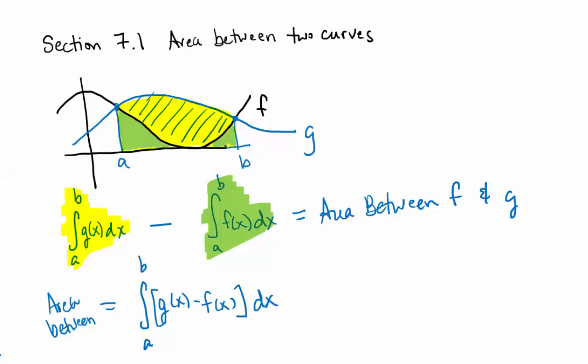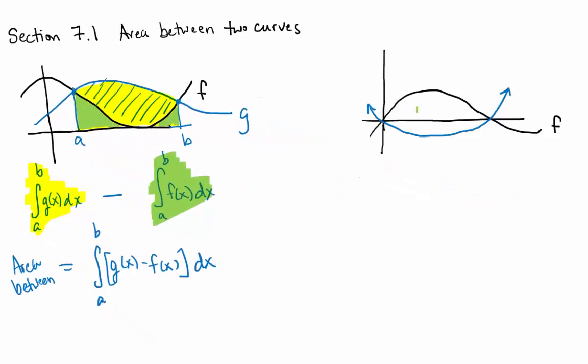So let's try to think about what if one of them happened to be negative, for example. How would we find the area between f and the x-axis? Definite integral from a to b of f of x.